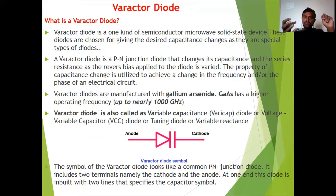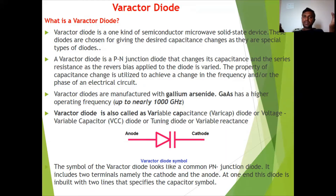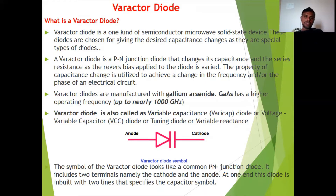By varying the applied reverse bias voltage, we vary the capacitance of the diode. That is why it is called a varactor diode — variable capacitor diode. The varactor diode is a semiconductor microwave solid-state device. These diodes are chosen for giving desired capacitance changes; they are a special type of diode that changes its capacitance and series resistance as the reverse bias voltage applied is varied.